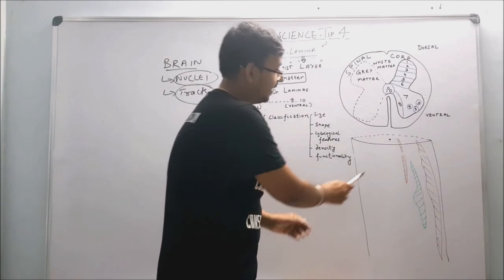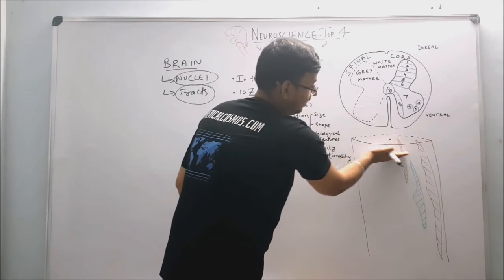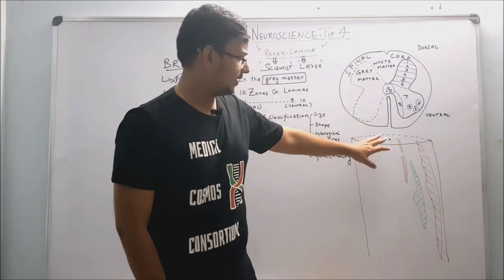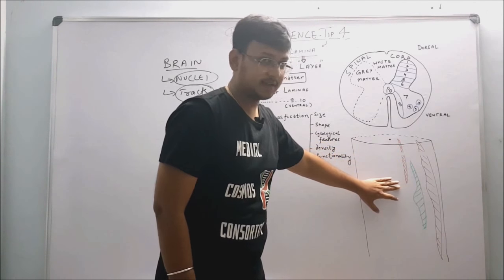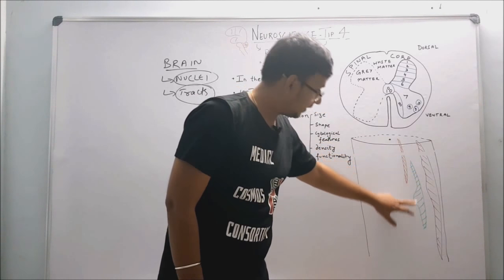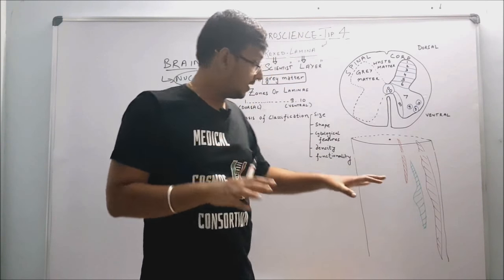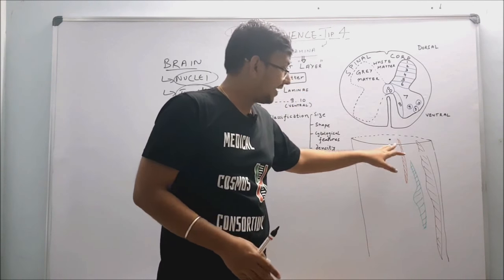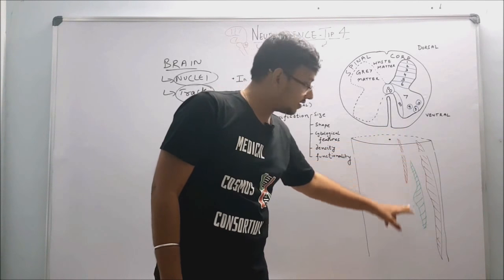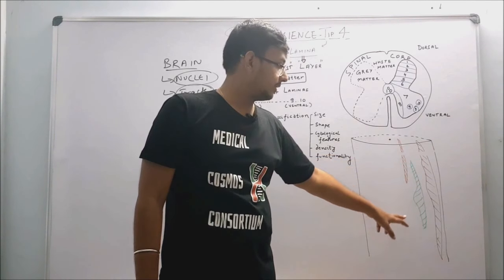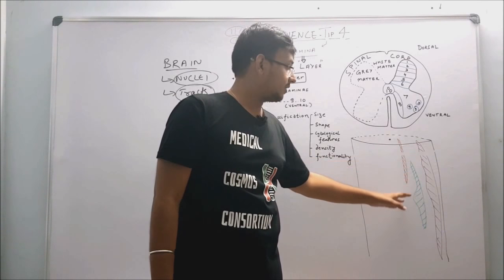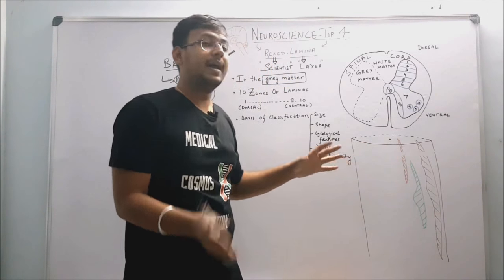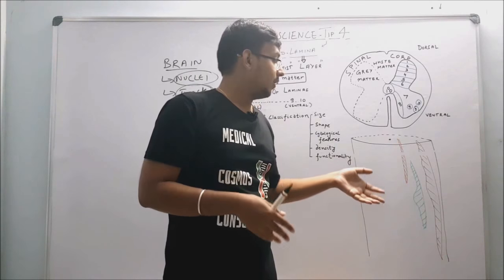Here, I've taken this section like this. This is, for example, first lamina covering up to this much extent, second is covering from this to this. So basically this gives you idea also that not every lamina spans throughout the spinal cord. Some lamina starts from middle, some lamina end initially or earlier than the other lamina.